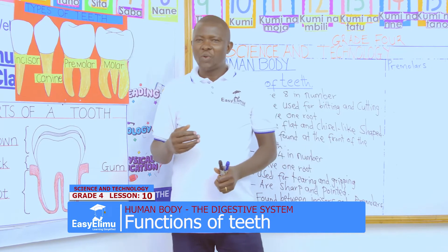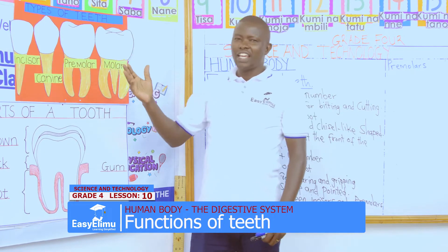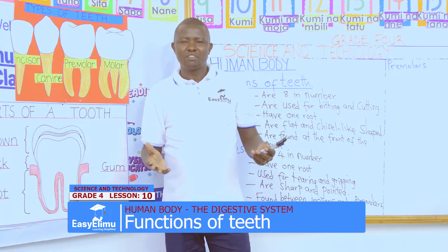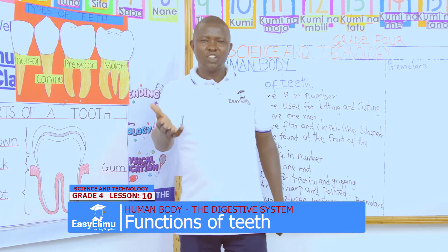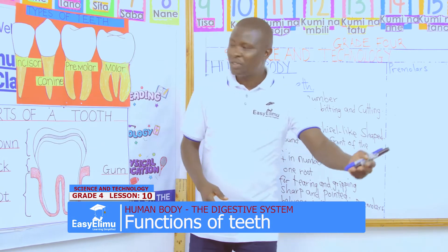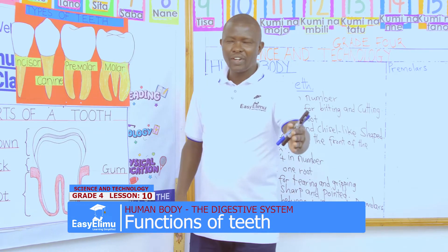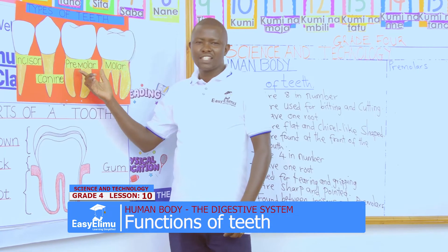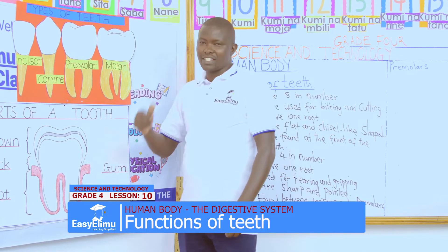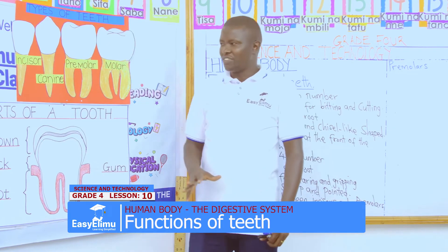In our previous lesson, we embarked on different types of teeth. Who can remind us the types of teeth? We start from John — we had incisors. Kamau — we had canines. Wydhira — we had premolars. And John — we had molars, as you can see them on our chart from yesterday.